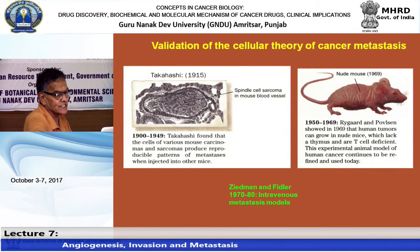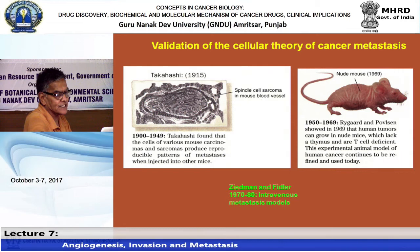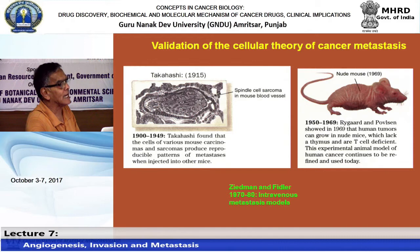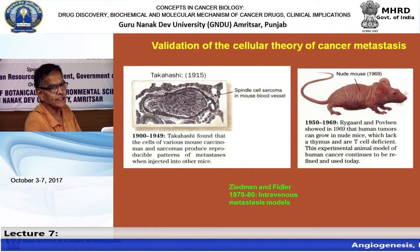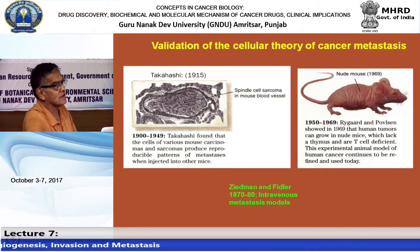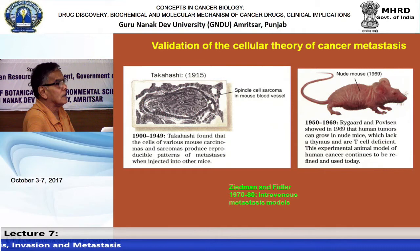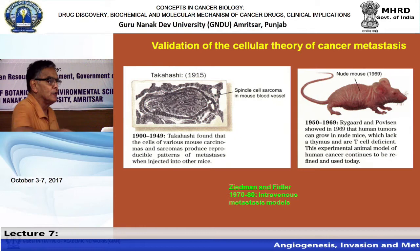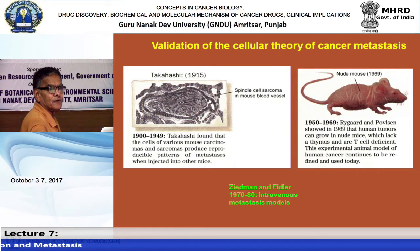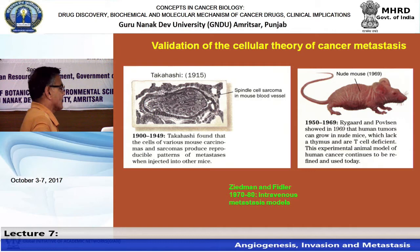Nude mice were developed around 1969 for cancer research. These mice lack a thymus and therefore have no immunity. This is critical because a normal animal's immune system would reject foreign human cancer tissue. Human cancer cell growth can be studied in athymic or nude mice - called nude because they have no hair.